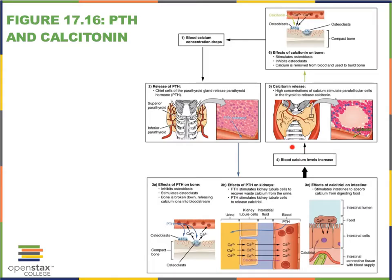If blood calcium levels begin to rise, PTH is not released. Instead, the thyroid gland releases calcitonin from the parafollicular cells — the cells that sit between the follicles. Calcitonin inhibits the osteoclasts, working opposite to PTH, and triggers the osteoblasts to start using calcium to make new bone tissue.